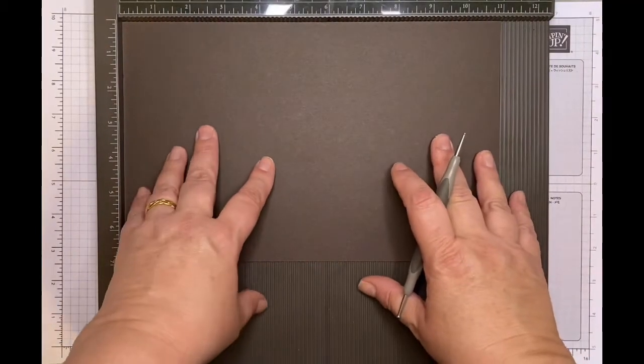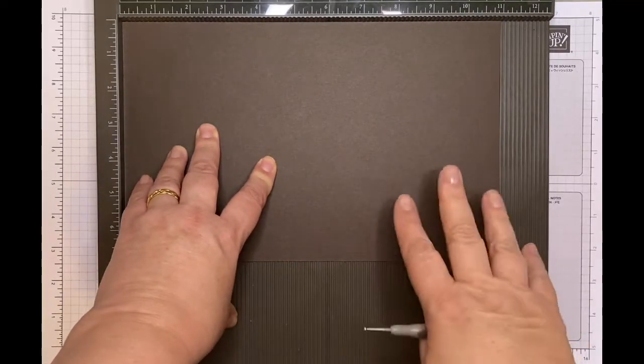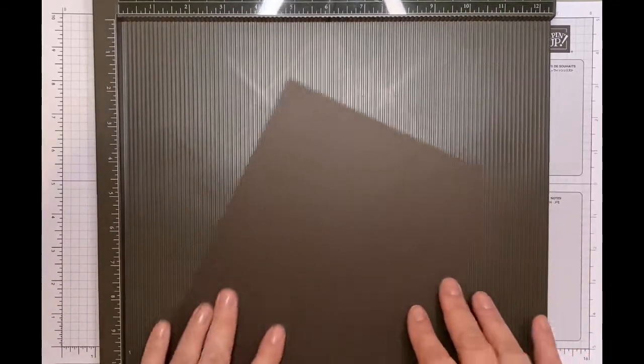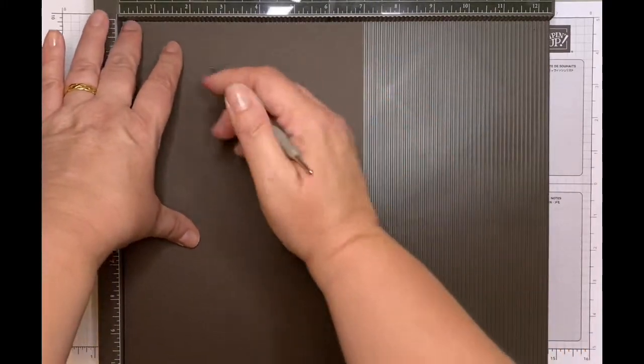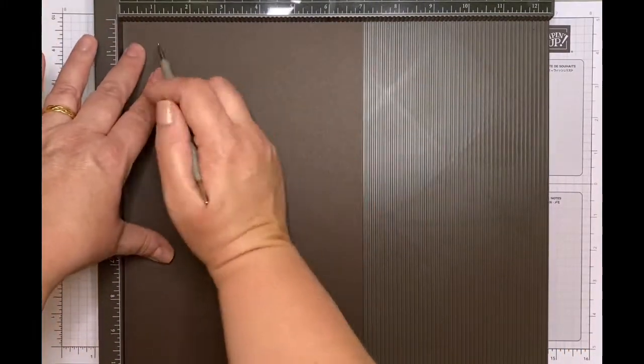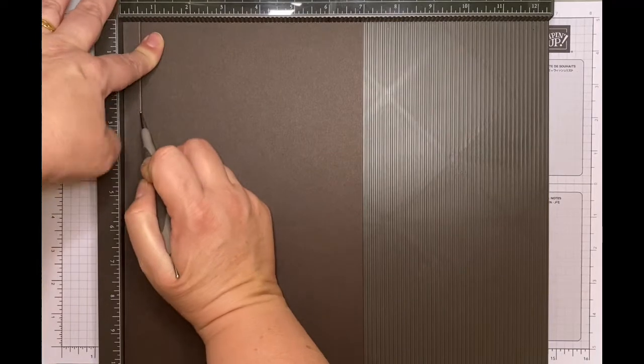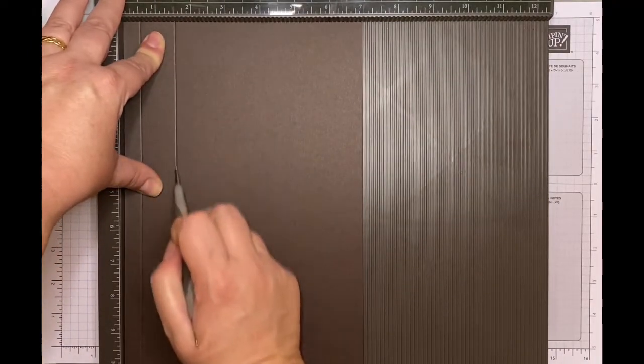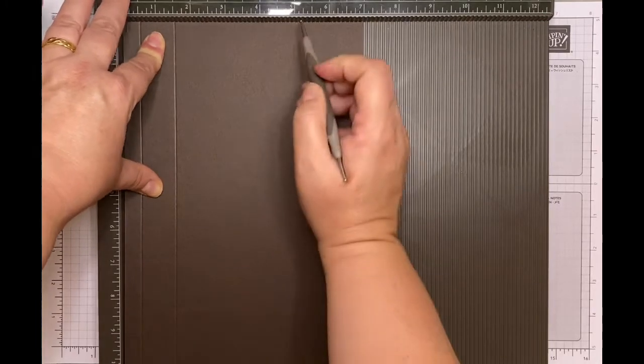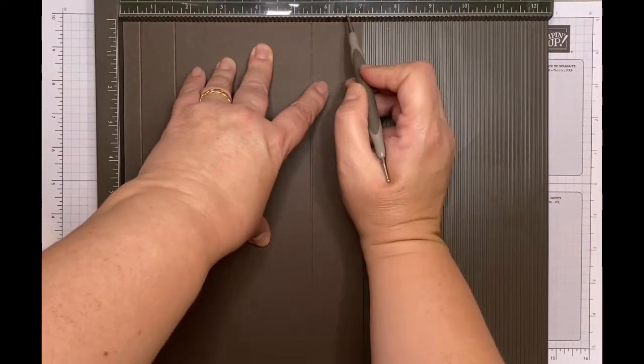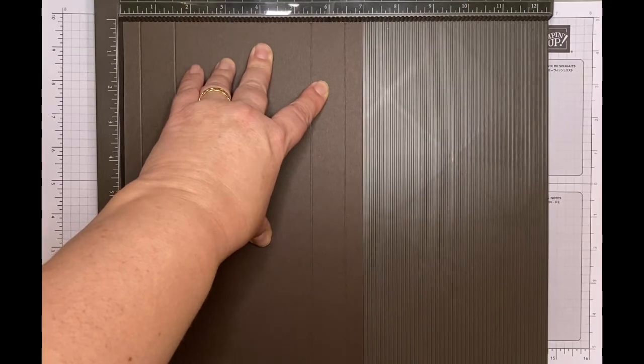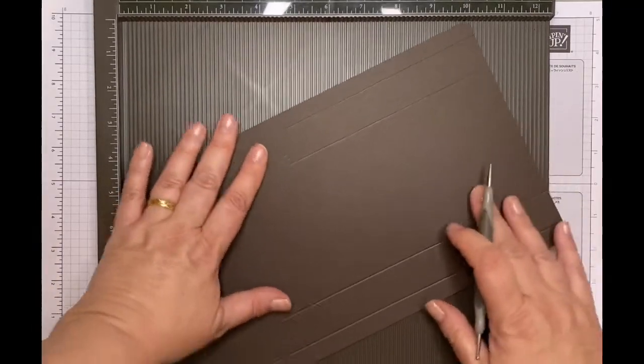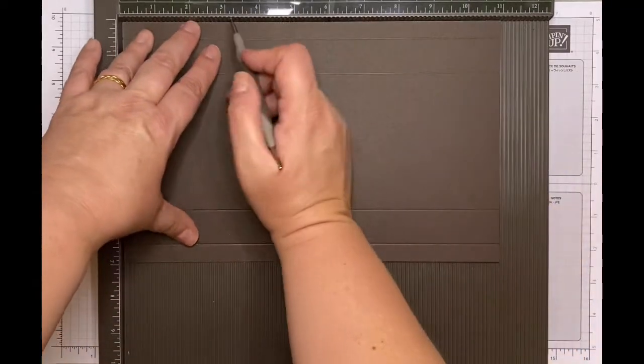I'm going to stick with the same colors. This is my Early Espresso cardstock, and it is 11 inches by 7. I'm going to score it on the short side, on the 7-inch side, at half an inch, one and a half, five and a half, and six and a half. Then I'm going to rotate it to the short side and score it at three and at four.